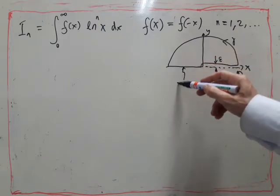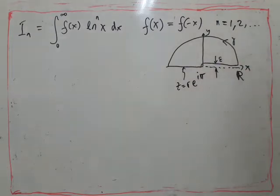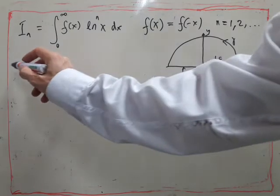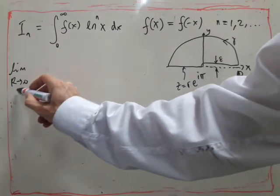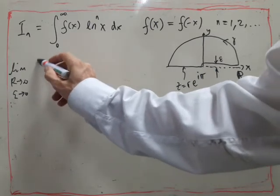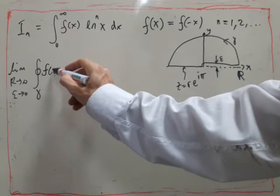Here we'll say that z is equal to r times e to the i pi. And see what happens. So we're going to consider the limit as r goes to infinity and epsilon goes to zero of the contour integral of just f of z.